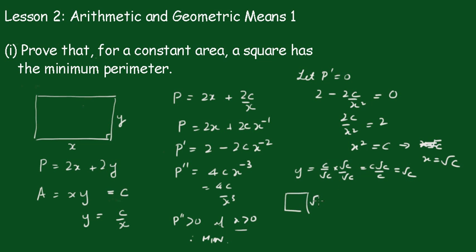So the minimum perimeter will be square and that minimum perimeter P will be equal to 4 root of c, which is 4 root xy.